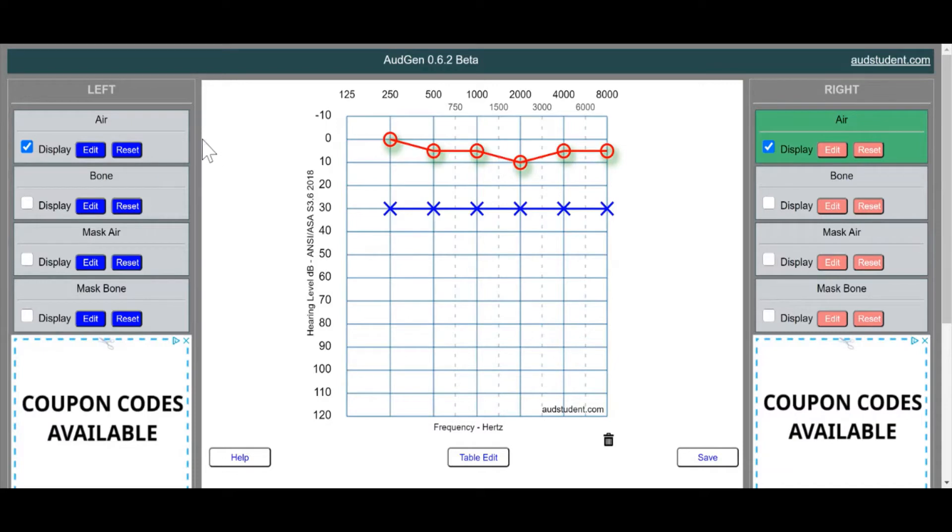And then let's edit our air conduction on the left ear. Now our left ear is the one that has the loss, and it's a sloping mild to moderately severe loss. Now in adults, we're assuming that it's an adult because it doesn't say it's a child. A mild loss has the range of 26 to 40 decibels, and a moderately severe loss is a range of 56 to 70 decibels.